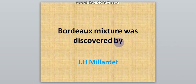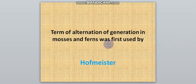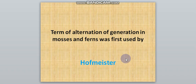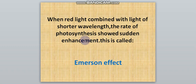X-mixture was discovered by J.H. Miller. The most primitive seed plants are gymnosperms. The term alternation of generation in mosses and ferns was first used by Hofmeister. Example of fossil psychic is Williamsonella.